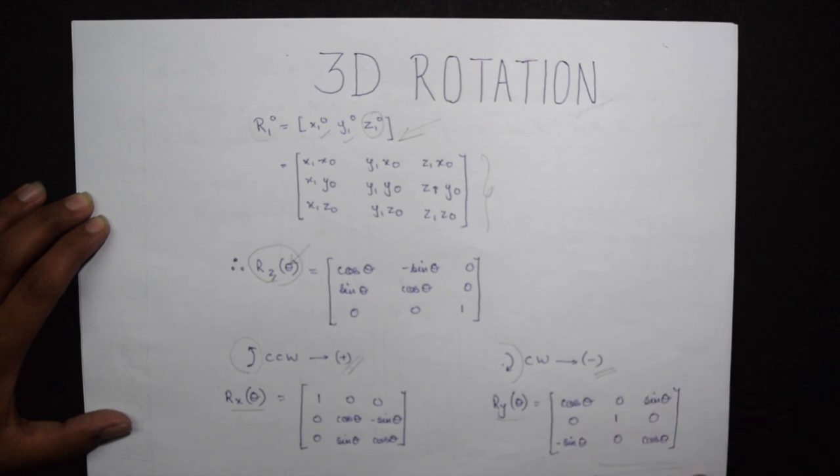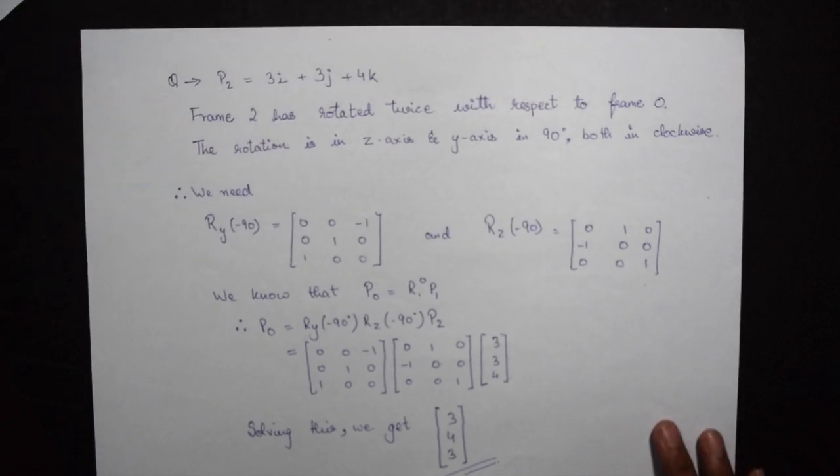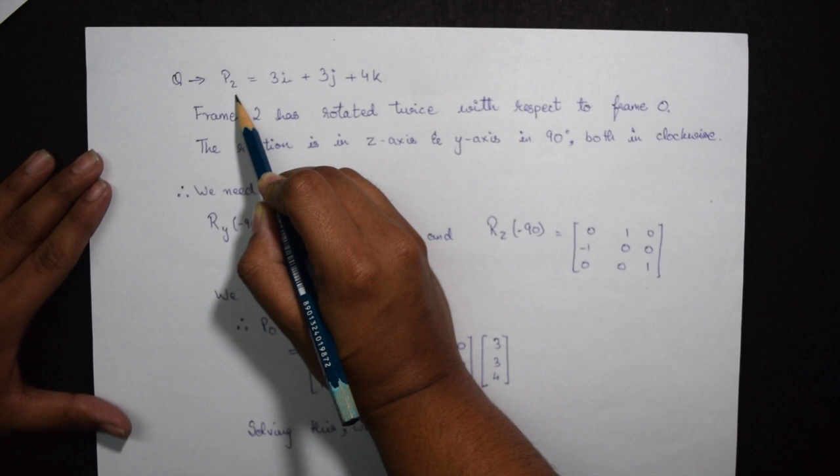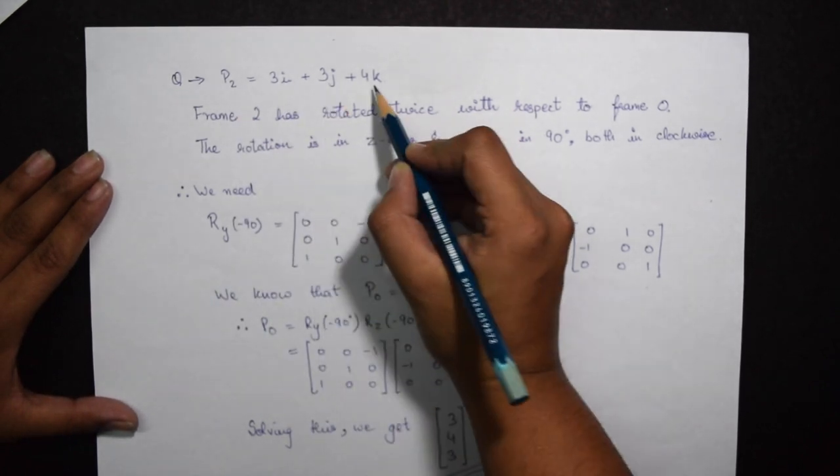Now let's look at an example so that you are perfect with it. We have an example where we already have a P2 frame as 3i plus 3j plus 4k.